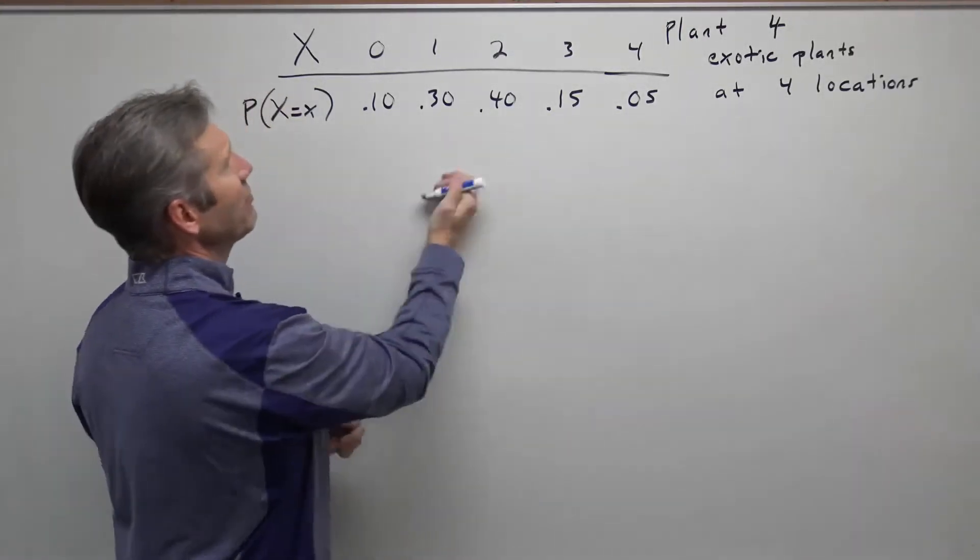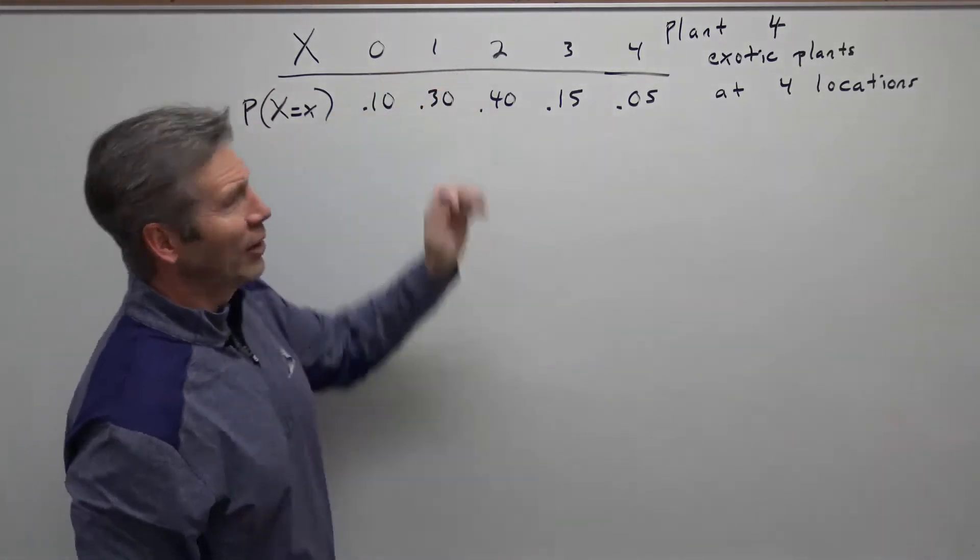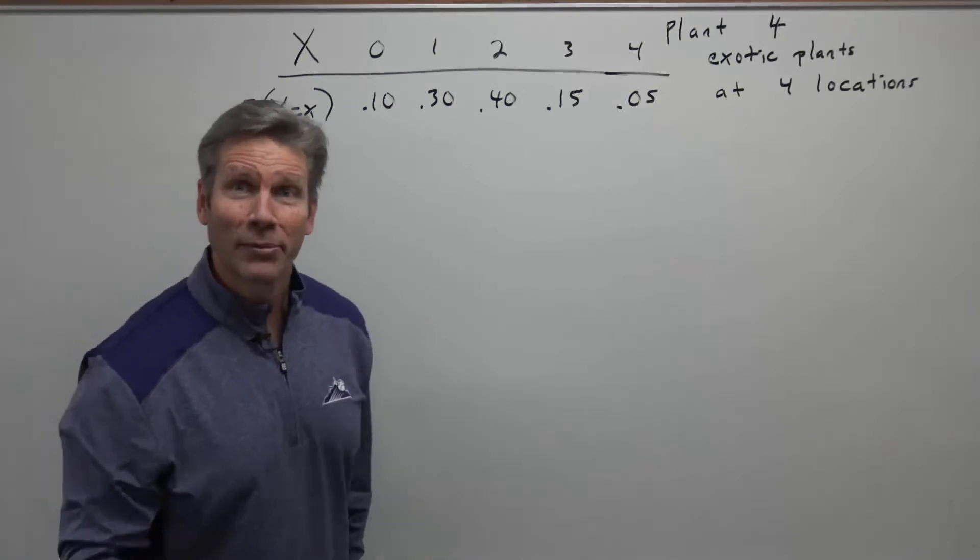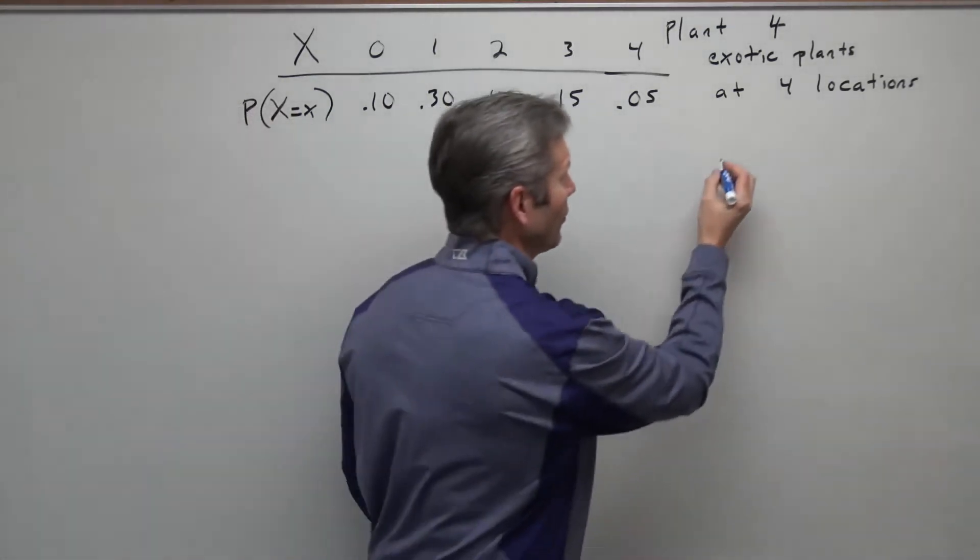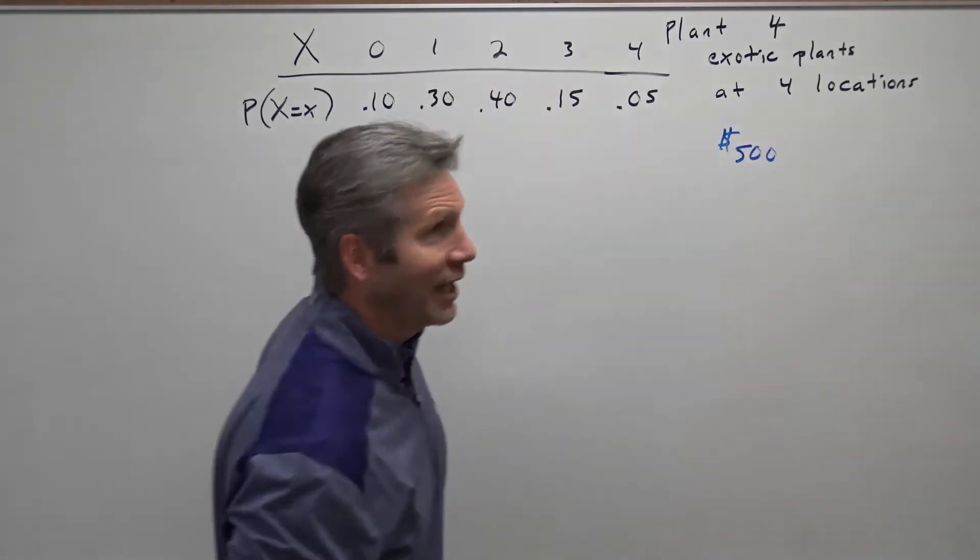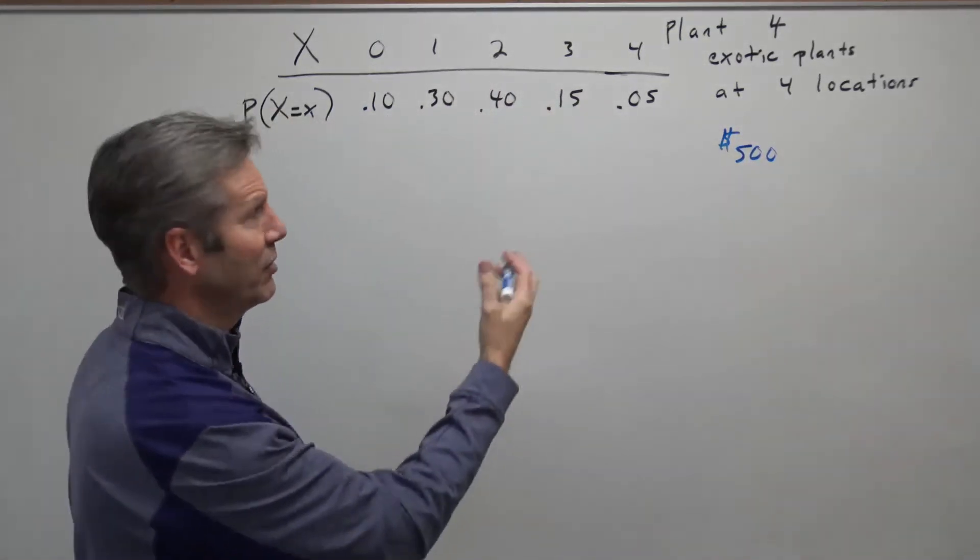So that's how random variables operate. They take on numerical values. But sometimes it's number of successes, sometimes it's something else. Let's suppose that we're going to pay $500 for every exotic plant that survives and makes it.